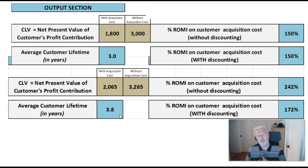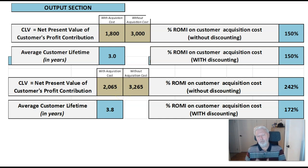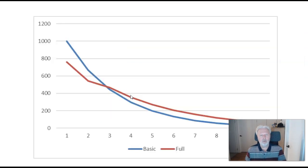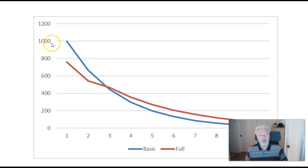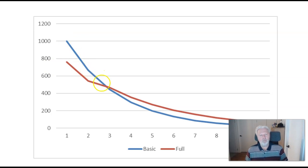If you're after a ballpark number the simple method is fine, but if you want a precise number and you're talking about lots of customers and substantial marketing investments, you probably need the complete version — which can be done using the template linked below. To explain what's happening in the basic calculation done over a series of years: we started making $1,000, but in the second year it drops to around $670 per cohort because we lose a third of our customers, and it keeps dropping.